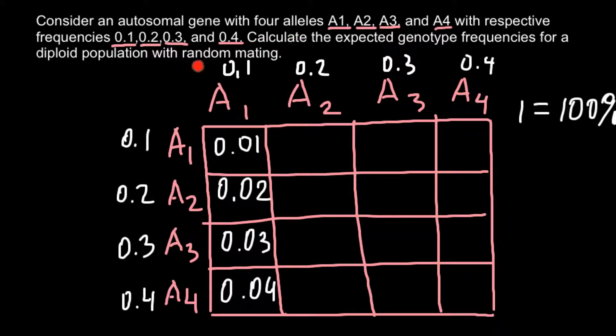If we combine all these frequencies, we get 100%. So these four alleles in the gene pool represent 100% of all the alleles and their frequencies.